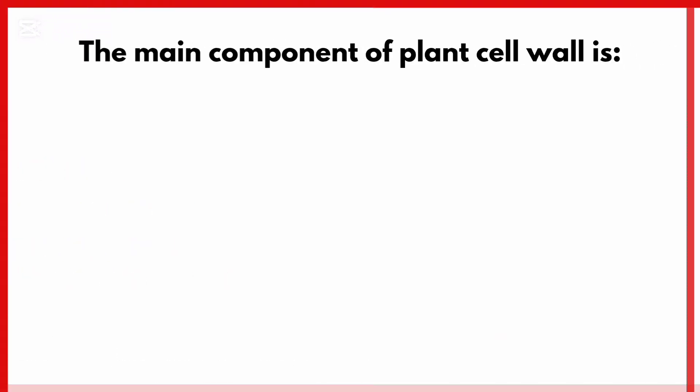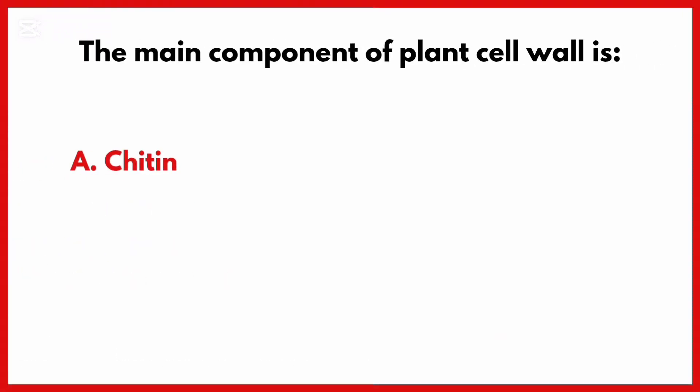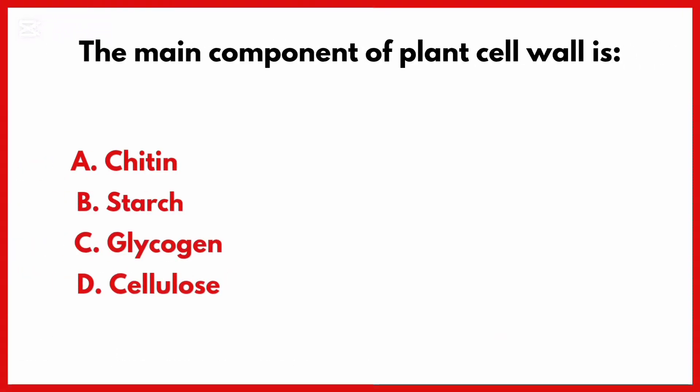The main component of plant cell wall is? Correct answer is option D: Cellulose.